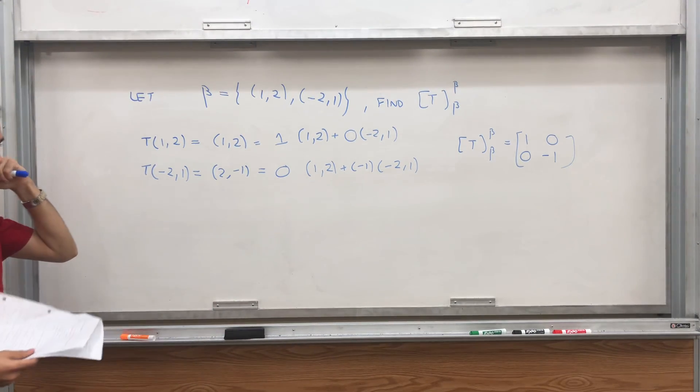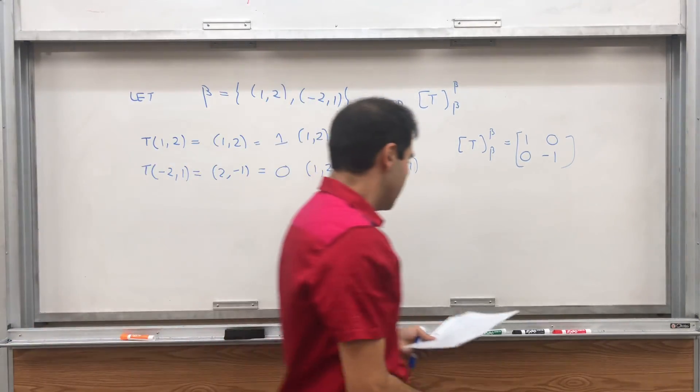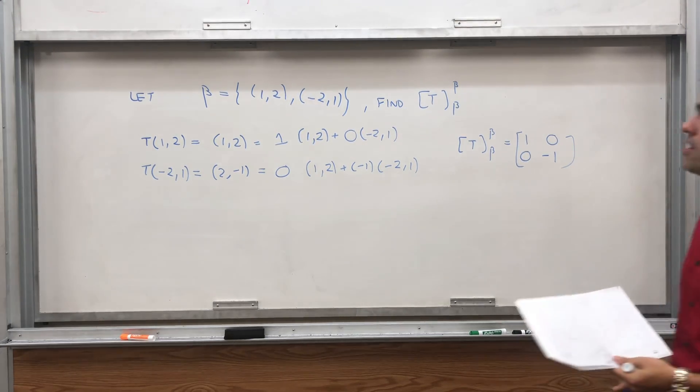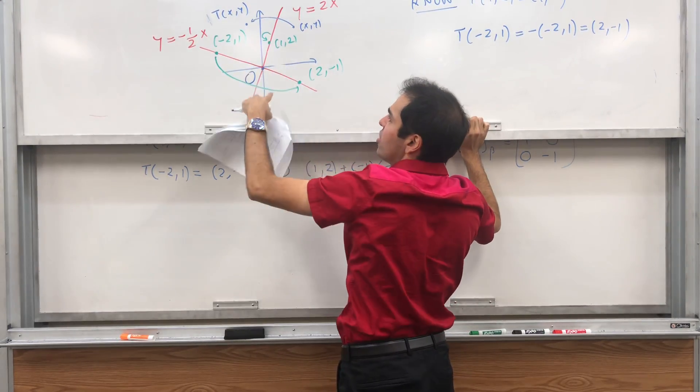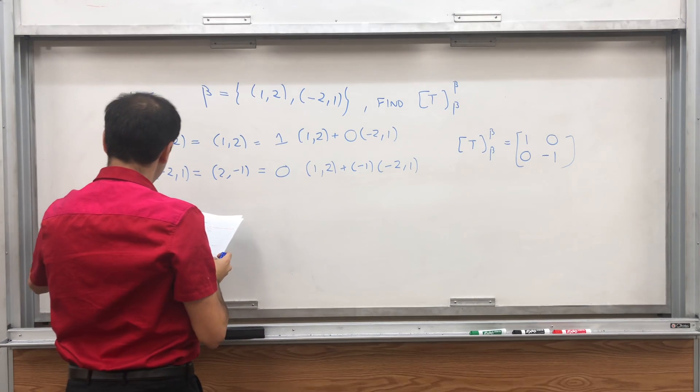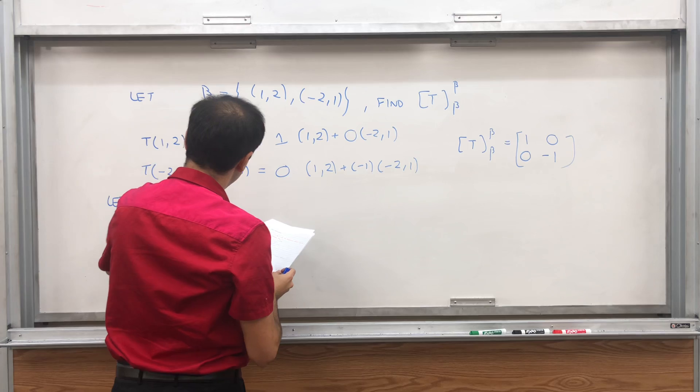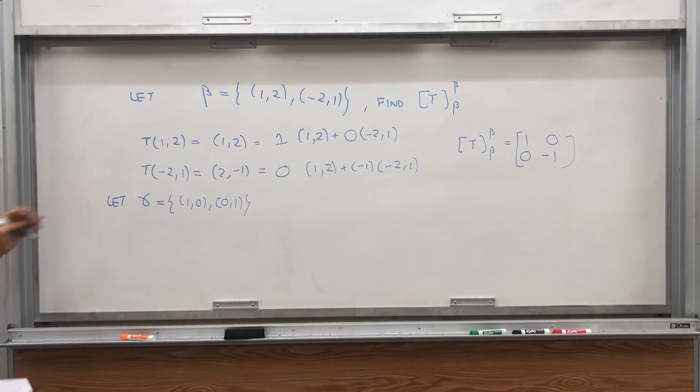And then you just need to write this in terms of your basis vectors. So it's 1 times (1,2) plus 0 times (-2,1). And this is 0 times (1,2) plus minus 1 times (-2,1). And therefore, all you need to do is gather those coefficients in columns. [T]_beta,beta. And again, very important that it goes in columns. So it's (1,0) as a column, and (0,-1) as a column.